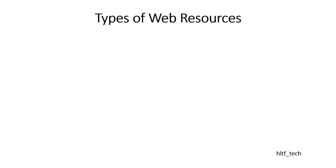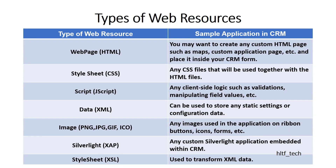Now we will see the types of web resources that exist in CRM. The first type is web page, that is HTML — you may want to create a custom HTML page such as maps or a custom application page and place it inside your CRM entity form. The second type is style sheet, which is any CSS file used together with HTML files. The third type is JavaScript — any client-side logic such as validations or manipulating field values. This is the most common use of web resources in Dynamics CRM.